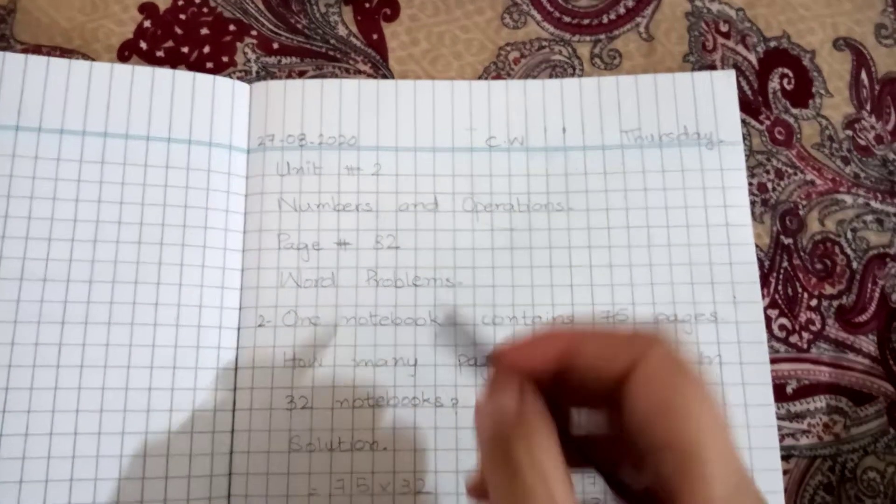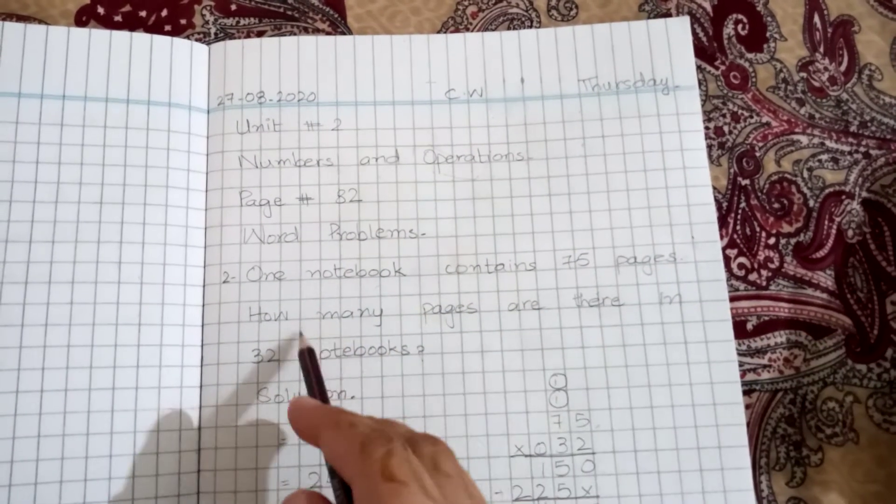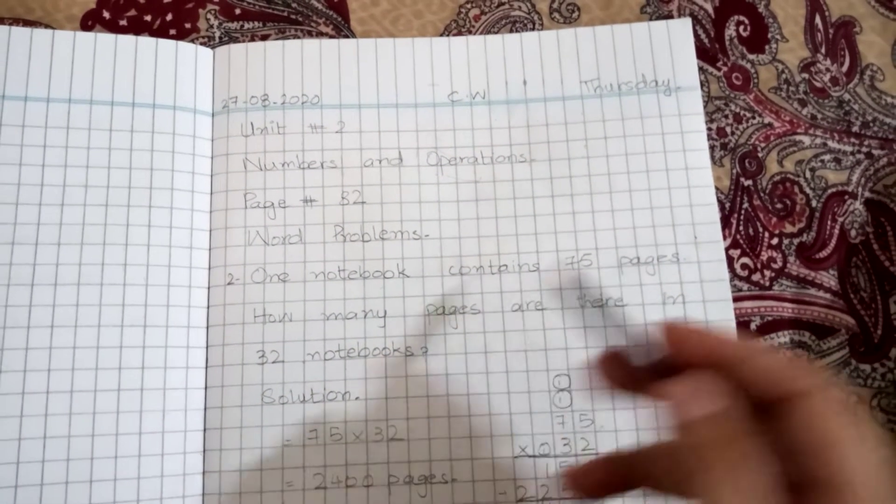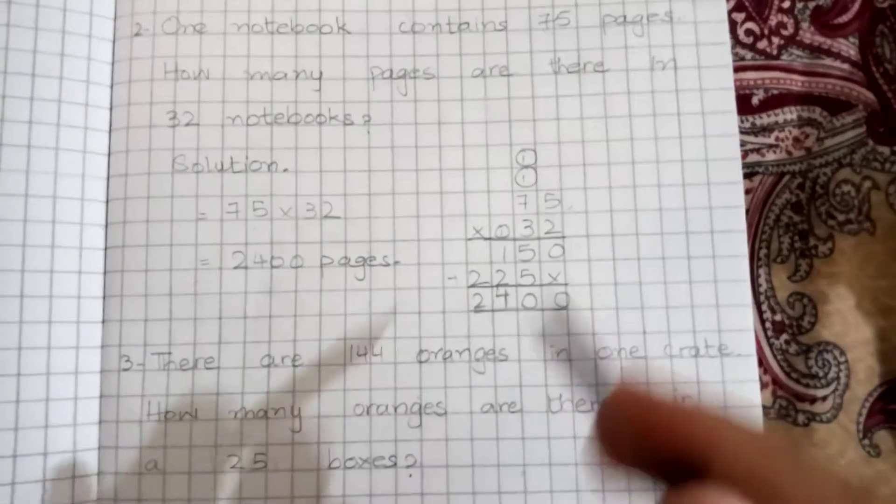Problem 1: One notebook contains 75 pages. How many pages are there in 32 notebooks? 75 pages per book, total 32 notebooks, how many pages? So multiply 75 by 32, and the answer I got is 2400 pages total.